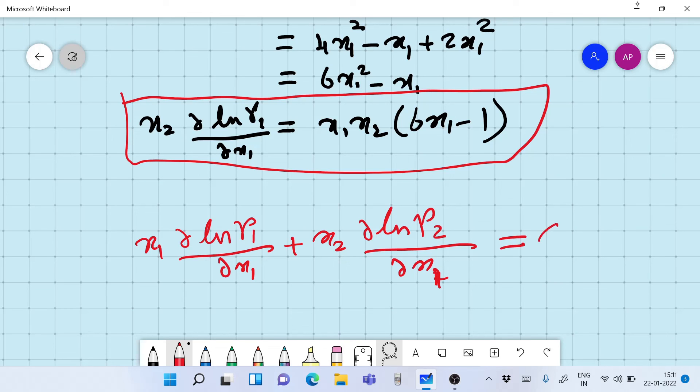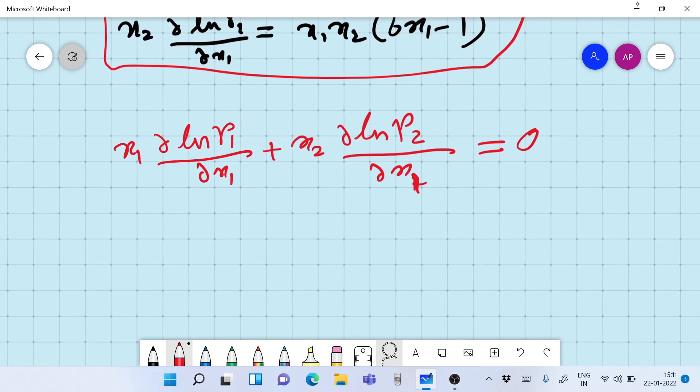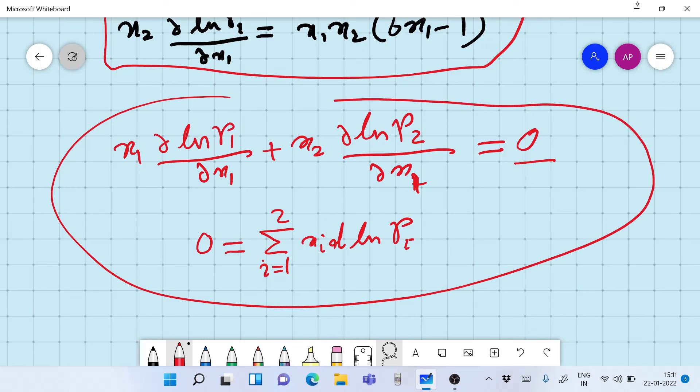And if we add, that is, if we take x1 into d ln gamma 1 by dx1 plus x2 into d ln gamma 2 by dx1, this will be equal to 0. And this 0 is equal to summation i equals 1 to 2 xi d ln gamma i. So here is the proof. This is the proof that yes, this equation follows Gibbs-Duhem equation.